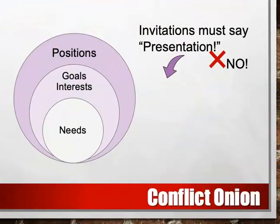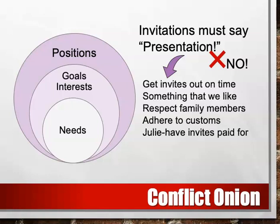In my case, the positions held by my mother and I were definitely in a win-lose framework. However, if we go beneath these positions, we can see that my mom and I actually had several shared goals and interests, including getting the invitations out on time, getting invitations that we like, respecting family members, adhering to customs, and — for me at least — having the invitations paid for by someone else. The either-or nature of the positions doesn't really offer enough flexibility for alternative solutions and pushes parties into a competitive win-lose orientation.